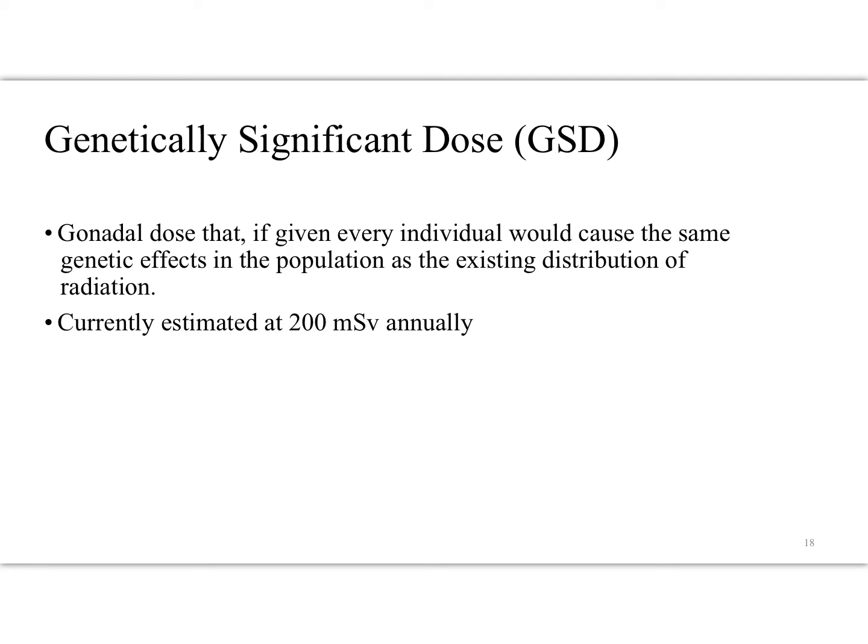Genetically significant doses are one of the more complicated things we'll think about today. The textbook talks about it as the gonadal dose that, if given to every individual, would cause the same genetic effects in the population as the existing distribution of radiation. In other words, it's an average quantity that gives us an indication of how much genetic harm is being caused to the entire human population due to the use of medical radiation. The textbook states that currently it's estimated at 200 millisieverts annually. Basically these genetically significant dose calculations reinforce the idea of keeping things as low as reasonably achievable — ALARA.